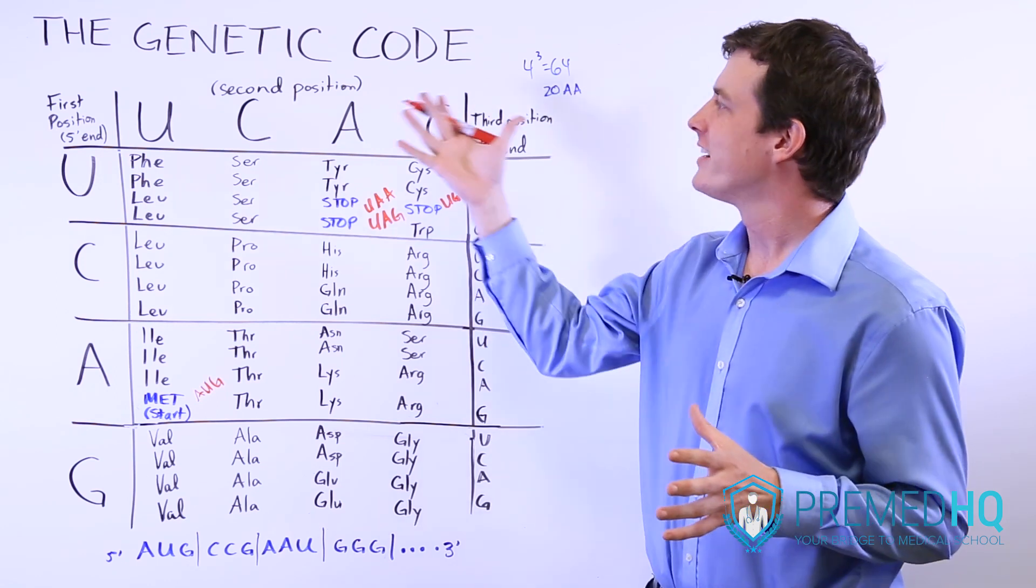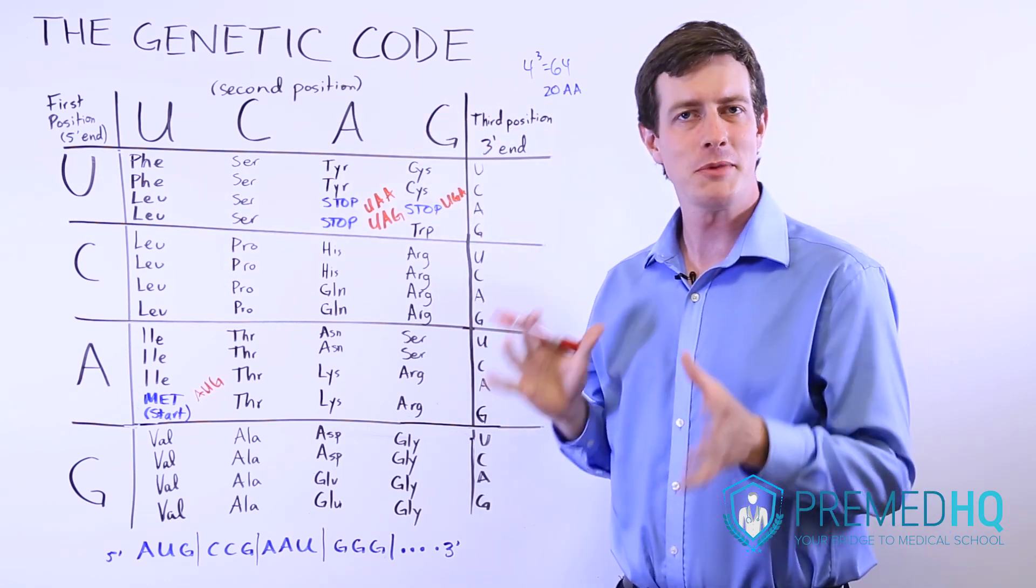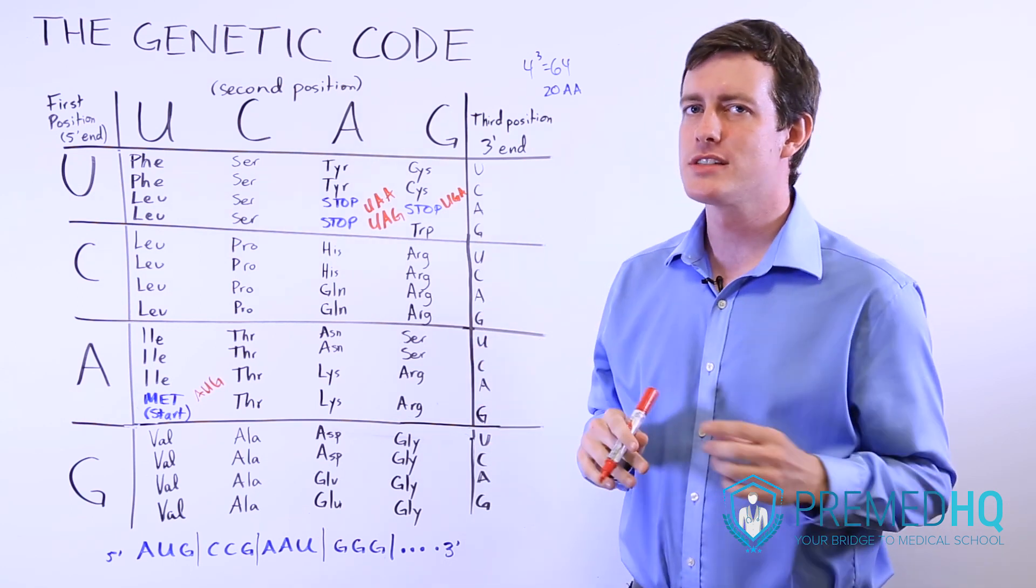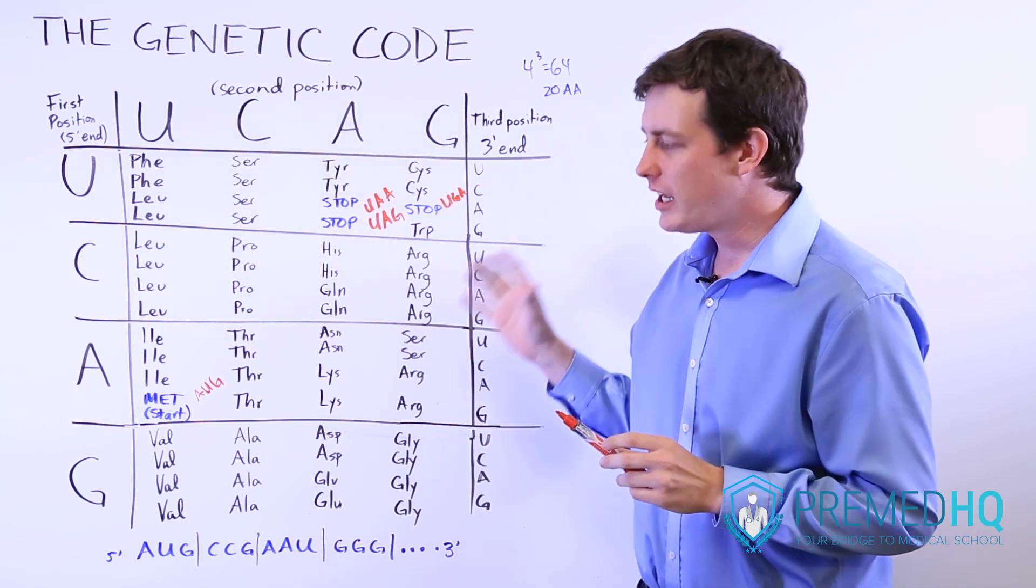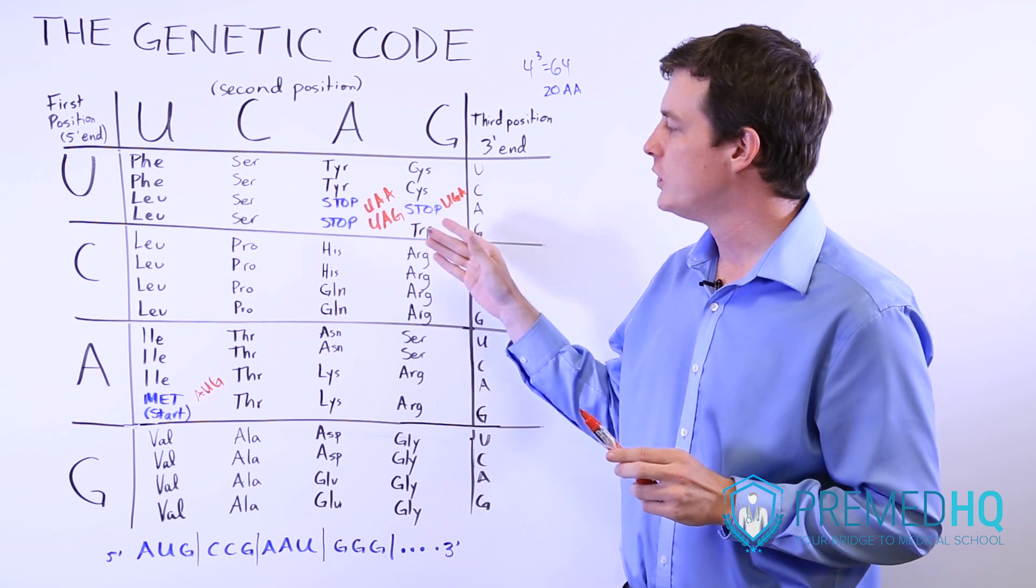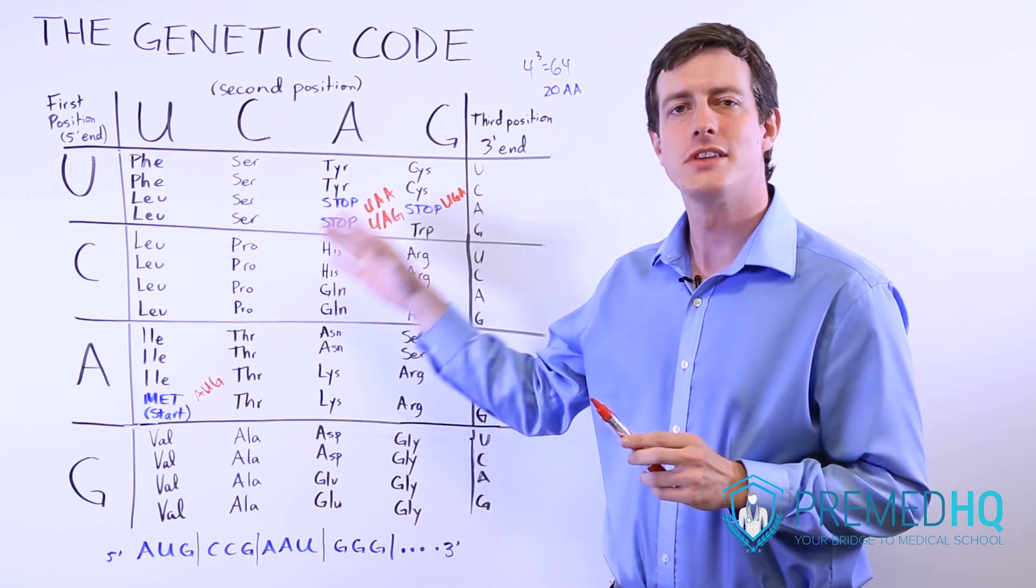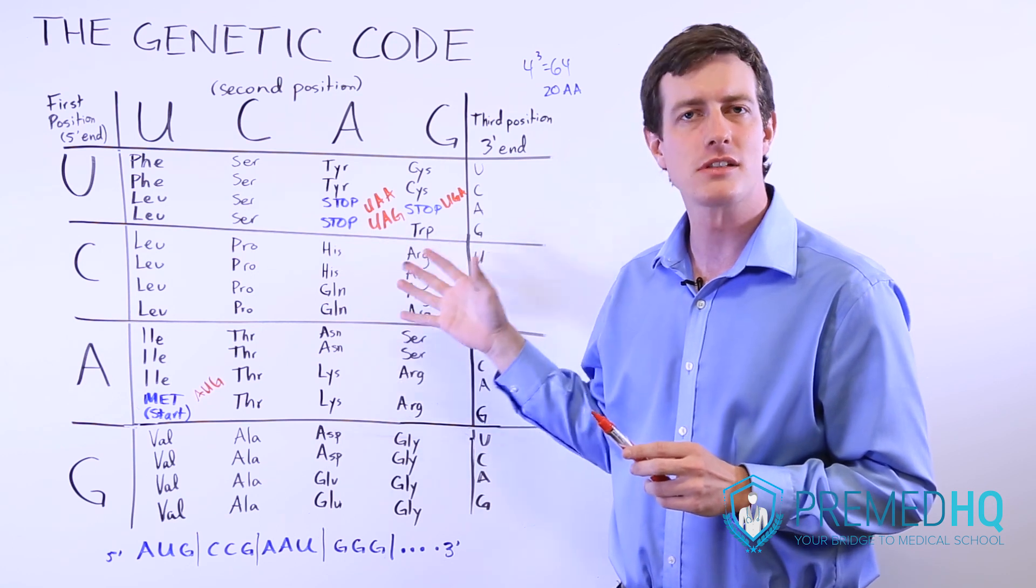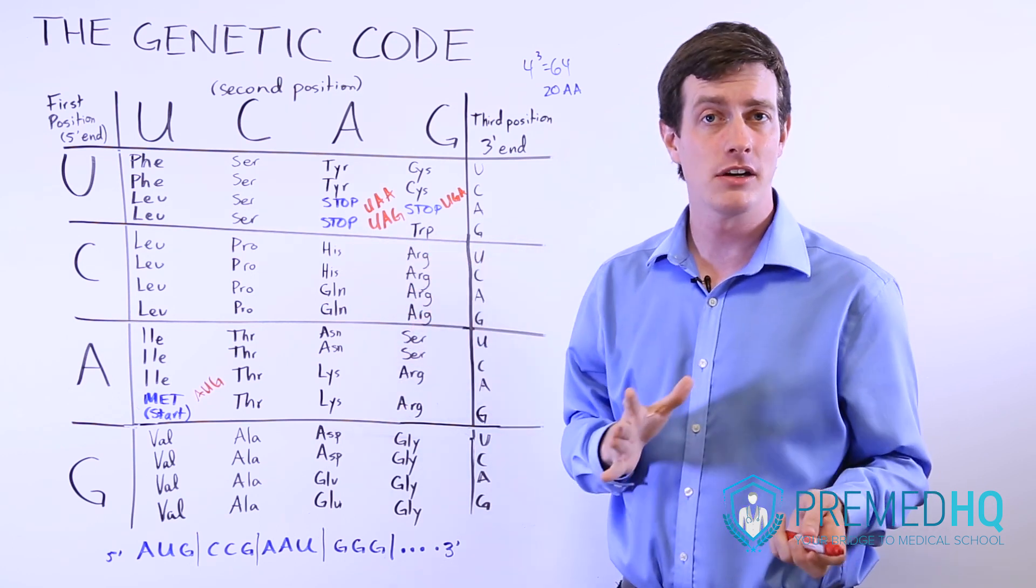This discussion of the genetic code lets us talk about mutations. Before we discuss that, I think it's important to make a note that mutations are referring to changes in the structure of the DNA because that is passed on and replicated and continuously used and can be inherited.